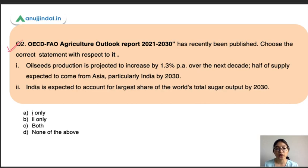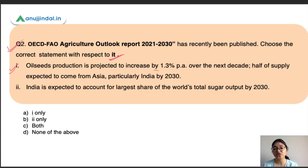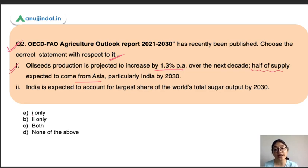The next question is also based on the OECD-FAO Agriculture Outlook 2021–2030. The first statement here says: oilseed production is projected to increase by 1.3% per annum over the next decade, and half of its supply would come from Asia, particularly India, by 2030. This is an important projection, as the Indian government is pushing hard to make India self-sufficient in oilseed production. This statement is correct.